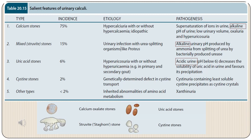Urease-splitting organisms split urea into ammonia, creating an alkaline pH of urine, and in this alkaline medium magnesium ammonium phosphate precipitates, forming struvite stones. These stones have a staghorn appearance with multiple projections on their surface, tend to be quite large, and tend to fill the pelvis and calyces.